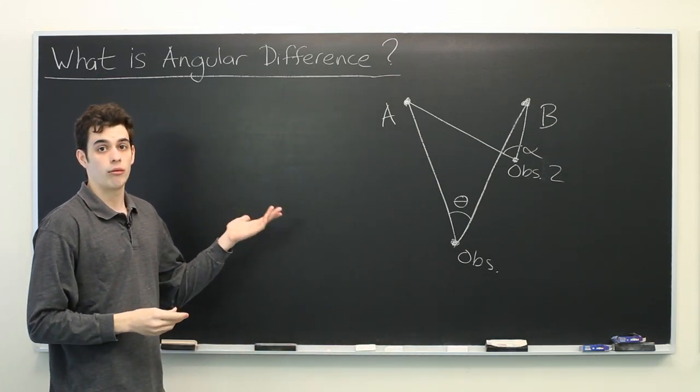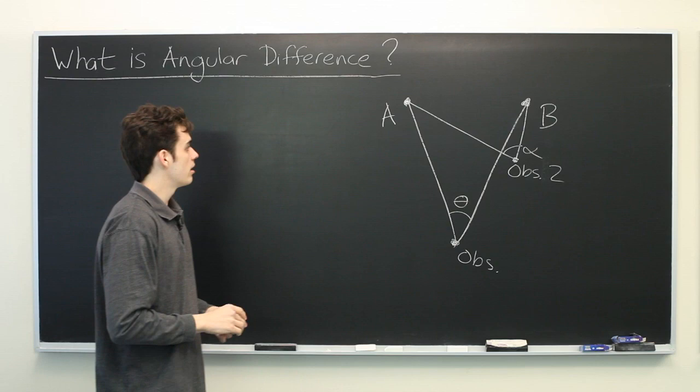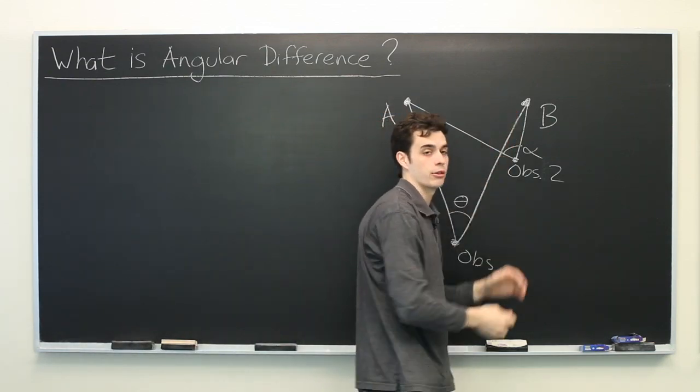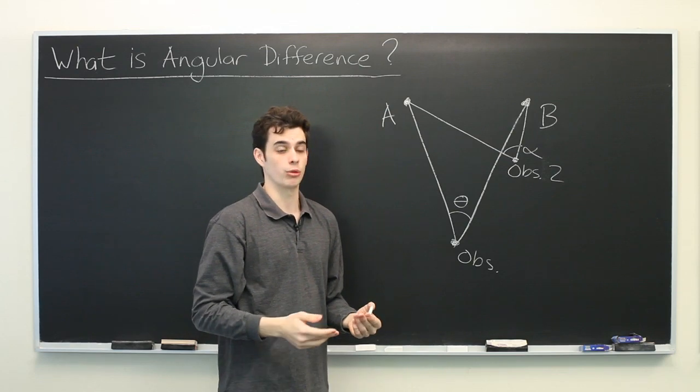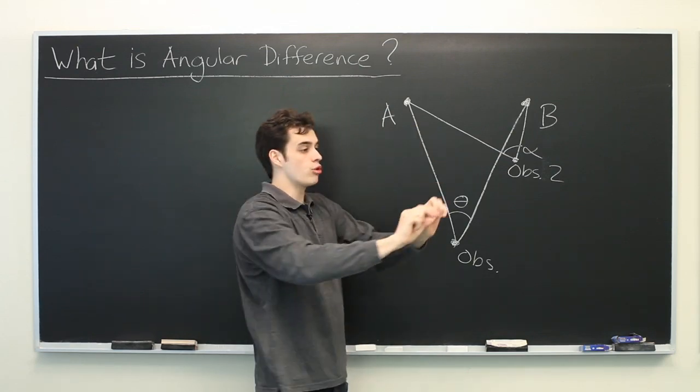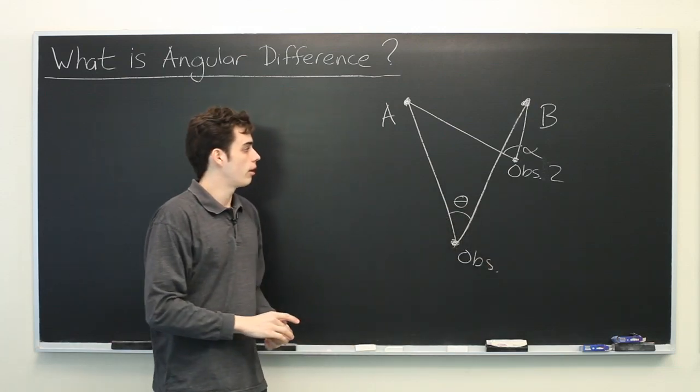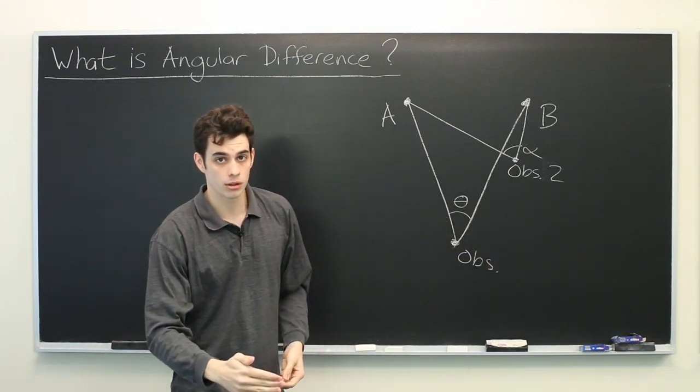The reason why this would be helpful or useful is that if you have a very wide angular difference, one of two things must be true. Either the two objects are very far apart or the observer is very close to the two objects.